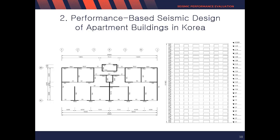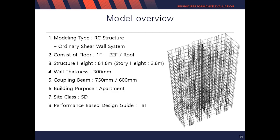The second application example is an apartment. Since the surface area of Korea is not large, typical residential buildings in Korea are at least 15 floors. Residential buildings that exceed 15 floors take up more than 50% of the total structure market in Korea. Therefore, PBD is highly demanded in these kinds of residential buildings. In Korea, most residential buildings consist of shear walls. In this case, the height is 61.6 meters and the thickness of the wall is 300 millimeters. Korea also typically follows the TBI guide for PBD. In TBI, there are two levels of design performance results.